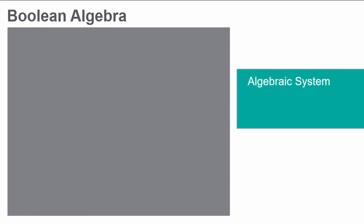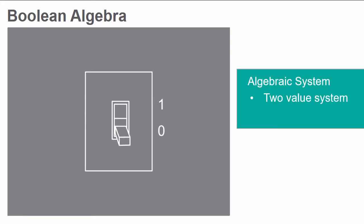In this lab we will also discuss Boolean algebra. Boolean algebra is an algebraic system where two values are used to represent the properties of bistable electrical switching circuits, namely ON and OFF, or simply 1 and 0.